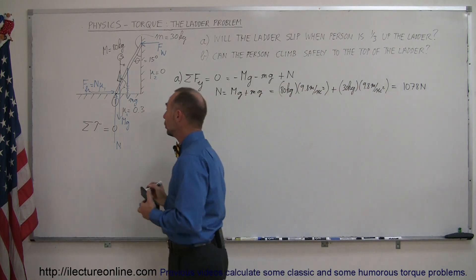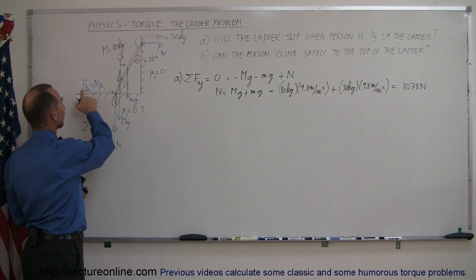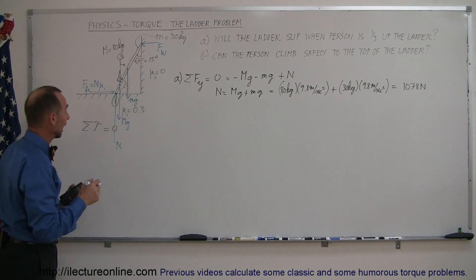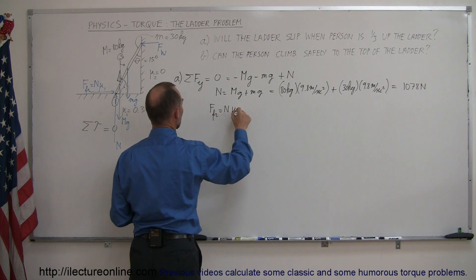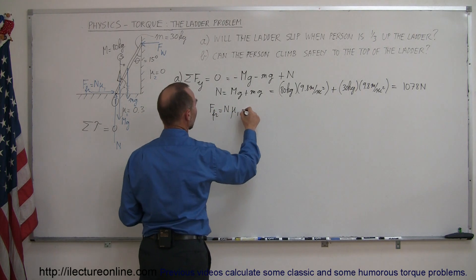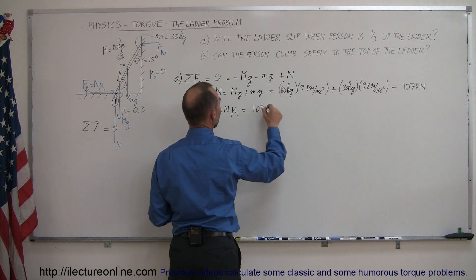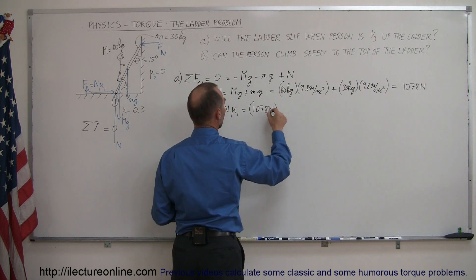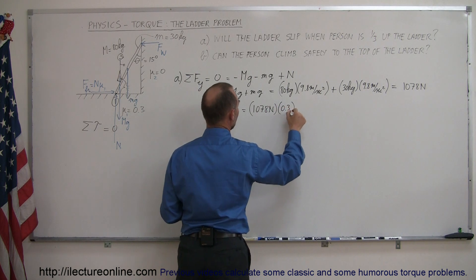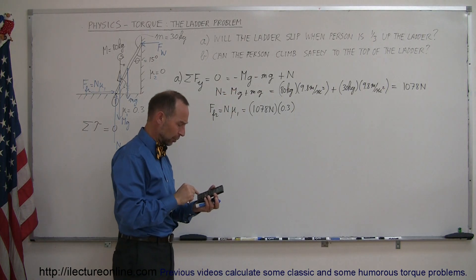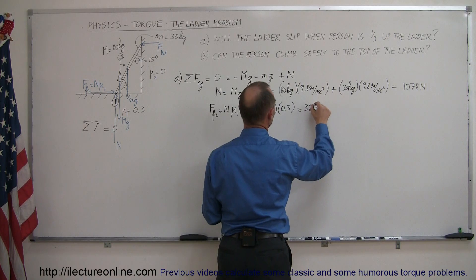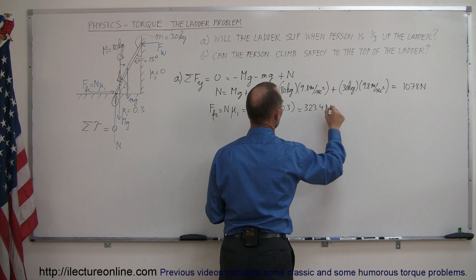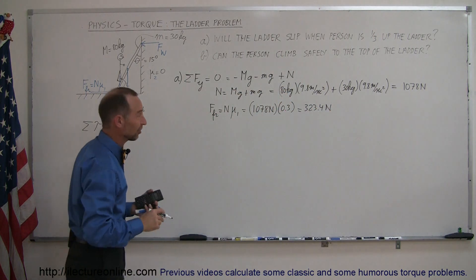Now that we know the normal force, we can figure out the friction between the ladder and the floor. The friction force equals the normal force times mu sub 1, which is 1,078 Newtons multiplied by 0.3. Multiplying by 0.3 gives us 323.4 Newtons of friction force keeping the ladder from sliding.